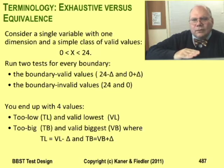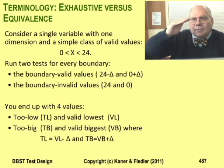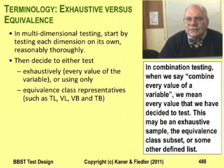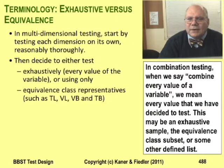I'll call those: too low, valid lowest, too big, and valid biggest. In equivalence based testing, all you test are the boundary cases. In exhaustive testing, you test all the values, not just the boundaries. Usually, combination testing is equivalence based.